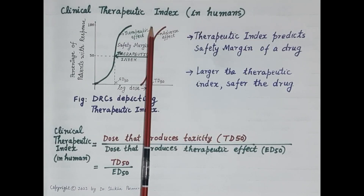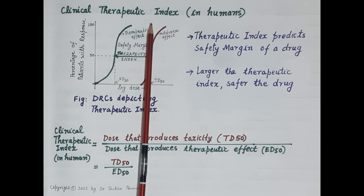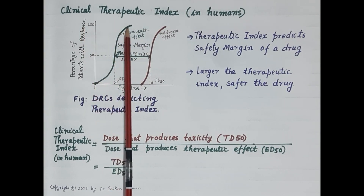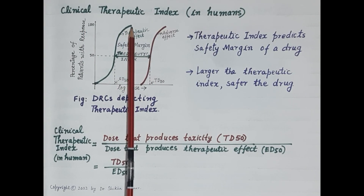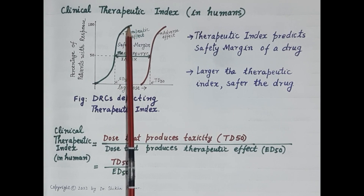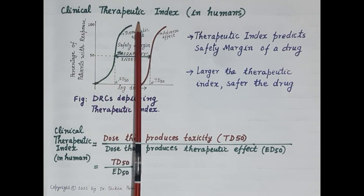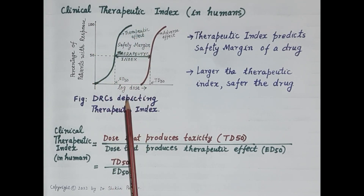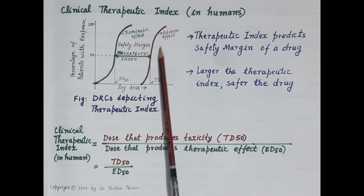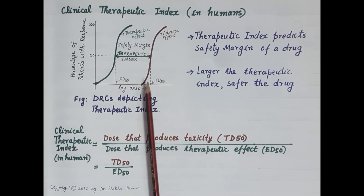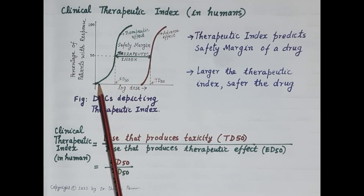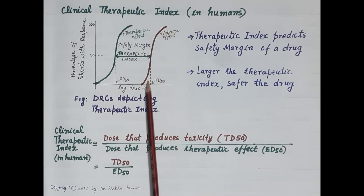Now let's talk about the clinical therapeutic index and the pharmacological therapeutic index. Knowledge of the clinical therapeutic index is important in clinical practice when dealing with patients, while the pharmacological therapeutic index is determined during experimental animal studies. Let's first look at the clinical therapeutic index.